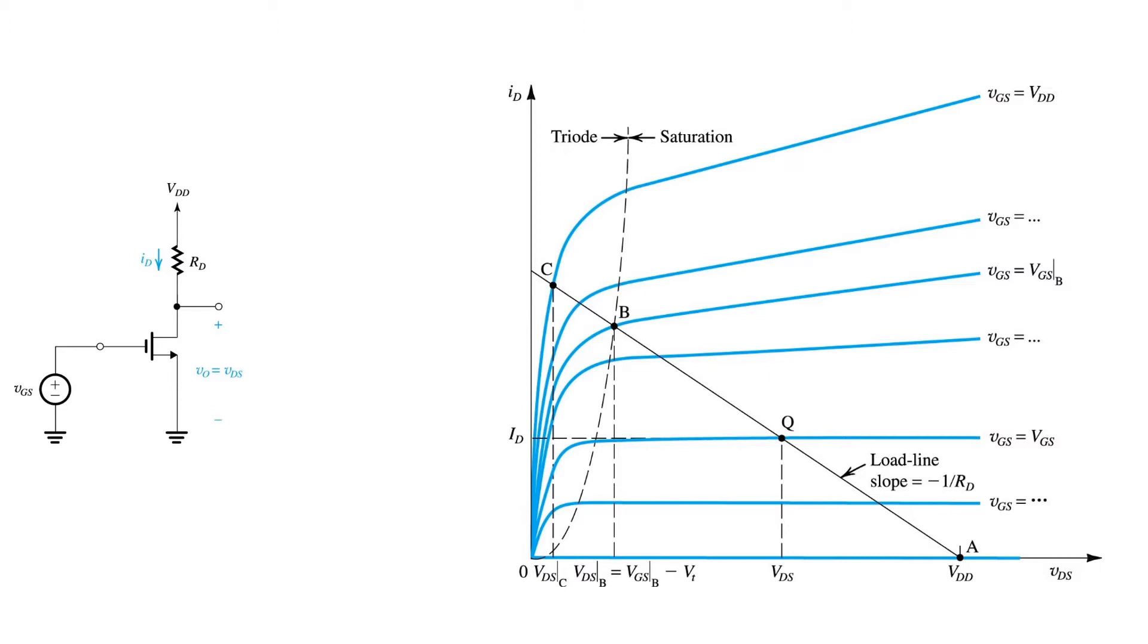We know that in triode, for values of VDS below the overdrive voltage, the IV relationship is governed by this expression. Whereas, if we're on the right side of this dashed line, we're in saturation.